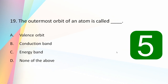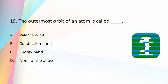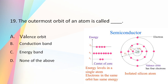The outermost orbit of an atom is called the valence orbit. The number of valence electrons in an atom is the number of electrons present in the outermost shell, which is of great importance in semiconductor physics.